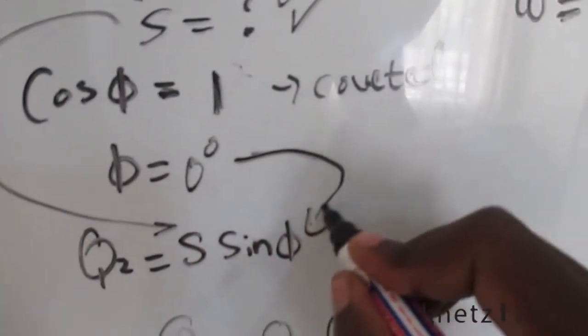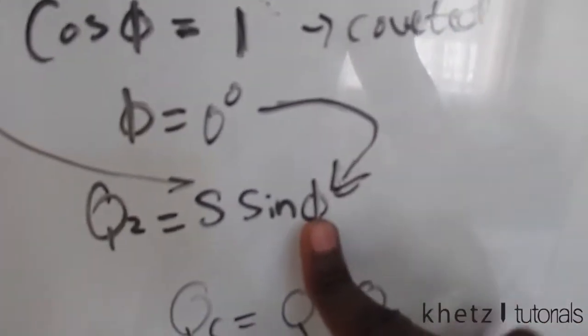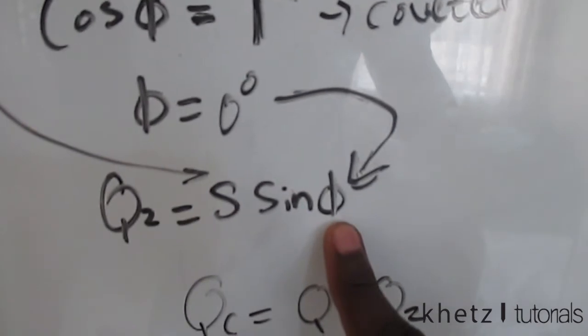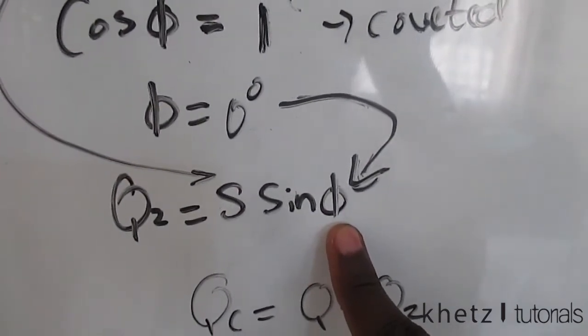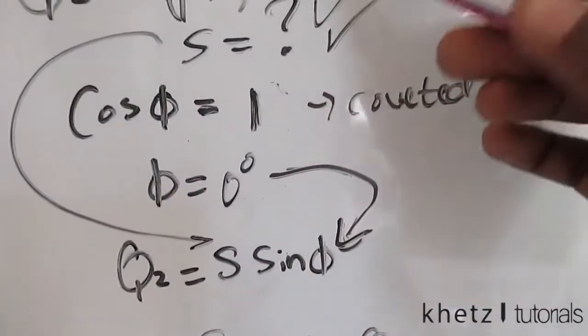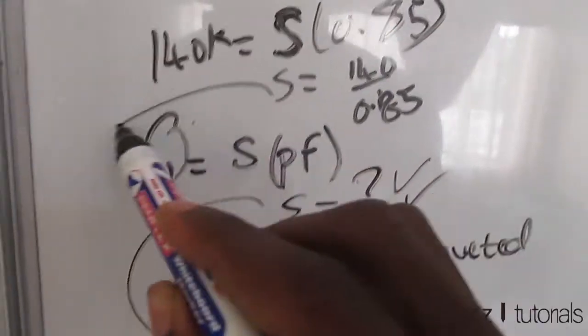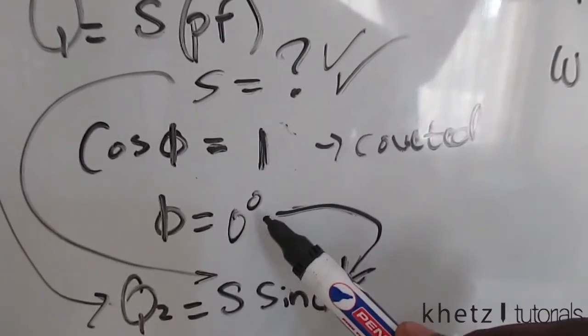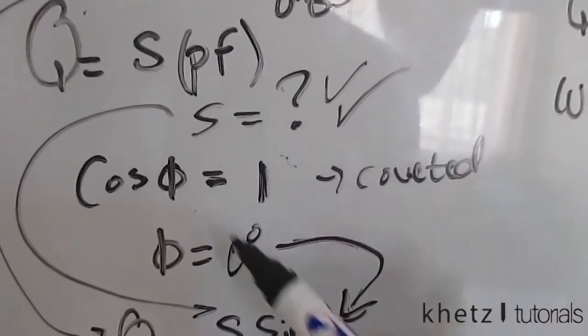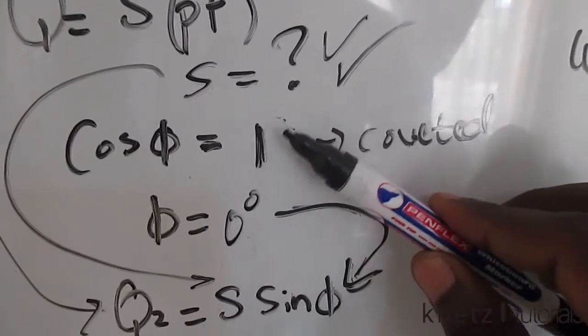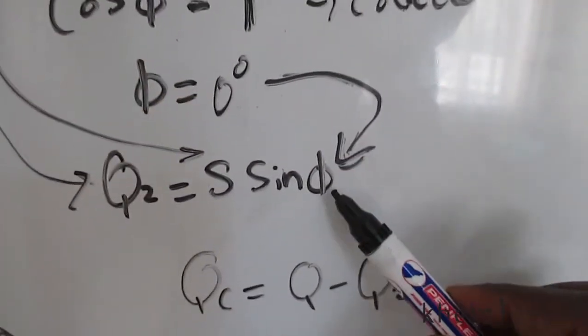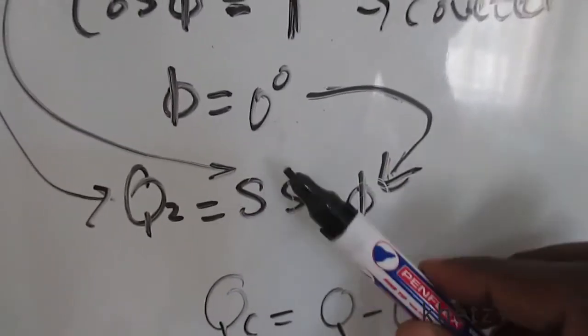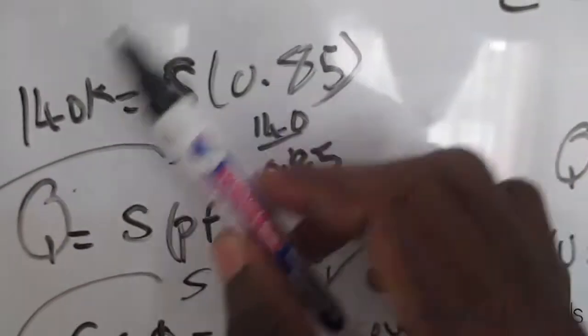You then take this angle and substitute it in here to find your Q2, which would give you the value you're actually looking for for your power factor. You take this S, that same S, you substitute it in here. You substitute your new angle which you found from manipulating your power factor which you want. You're going to substitute the angle for the power factor which you want as well at the same S which you found from the information you have in the question.